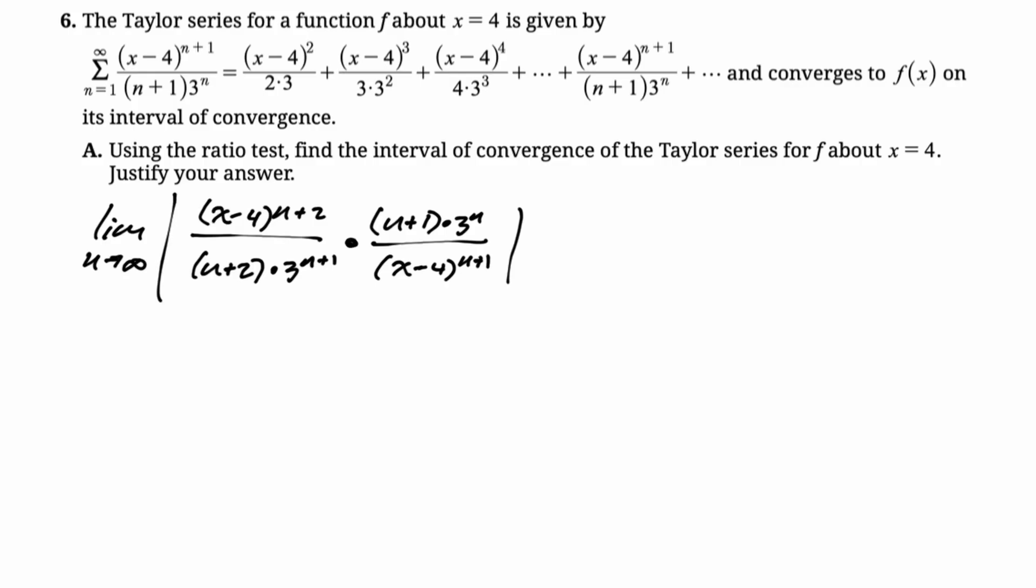So you have x minus 4 to the n plus 2 over x minus 4 to the n plus 1, which just leaves you with the absolute value of x minus 4. Then the n plus 1 and the n plus 2, if you go to infinity, those just have a limit of 1, so they're not really impacting anything. We have 3 to the n divided by 3 to the n plus 1. That leaves a 3 in the denominator. So the limit is this.